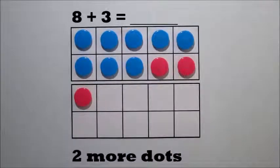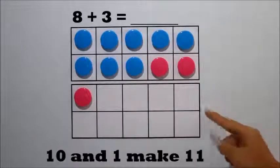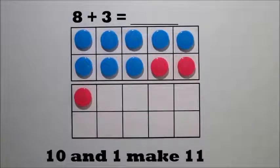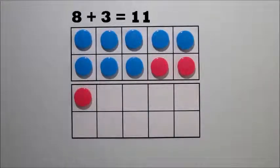Now, we have 10 and 1. 10 and 1 make 11. So, 8 plus 3 equals 11.